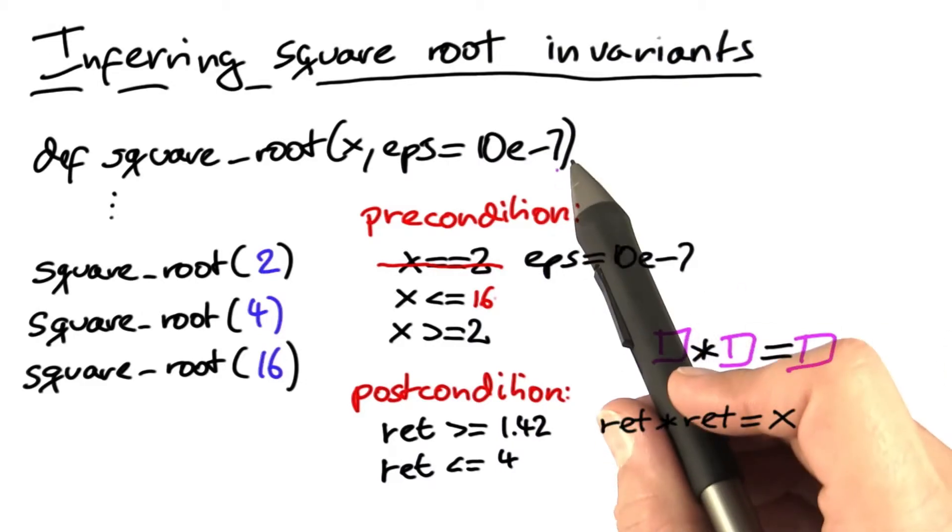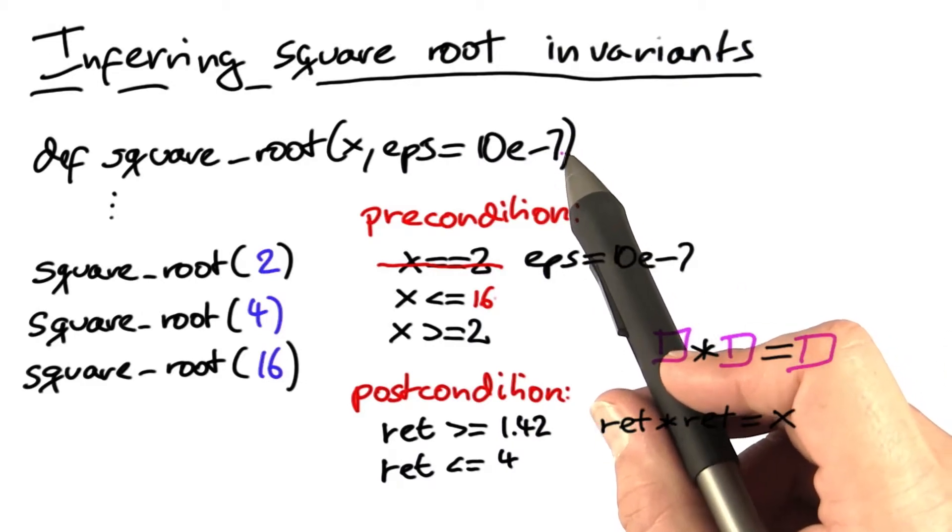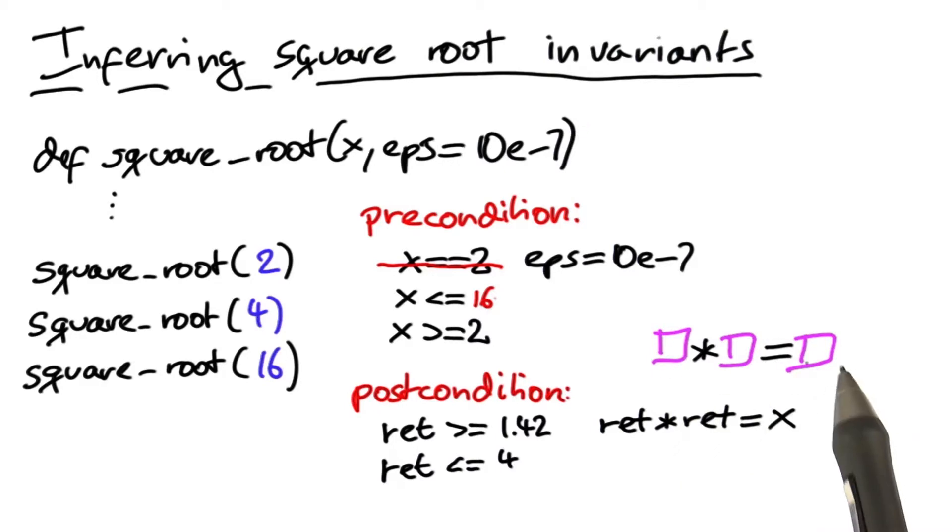If we put in floating point numbers, then eps also comes into play because of rounding errors. And then this pattern would no longer be discovered.